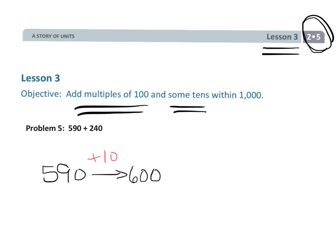And then I could say, well, now let's add 100. And that would bump us up to 700. And then I can add another 100, and that gets us up to 800. Now, so far, I can see that I've added 200 plus 10. So how much more do I need to add to get up to the total of 240? Well, I need to add 30 more. So I'm going to add 30 more, and that gives me the answer of 830.